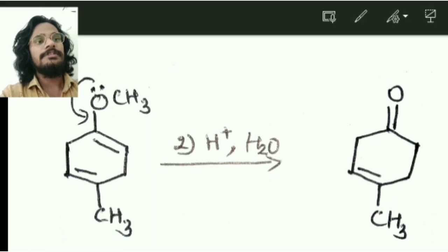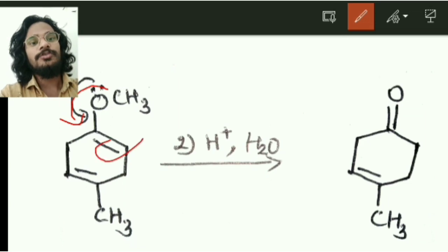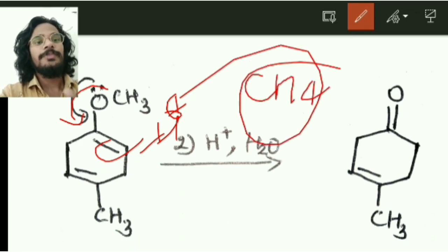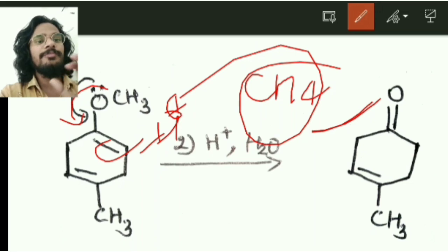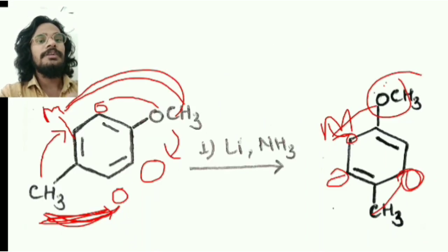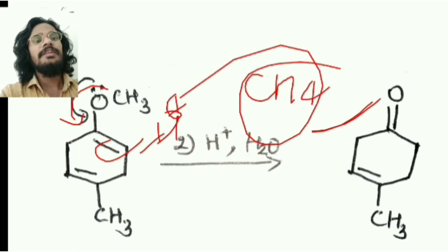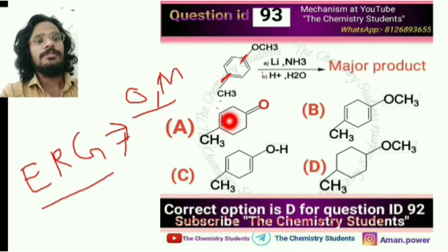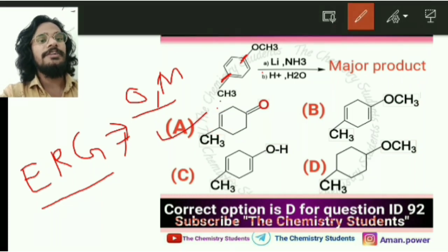This is the second step of the reaction. You get the cyclic ketone product here, and the side product is ethanol or methanol. So this is your final product for this reaction. To summarize: we applied Birch reduction first, then protonation — converting the enol ether to the ketone. So option A is the correct answer for this reaction.